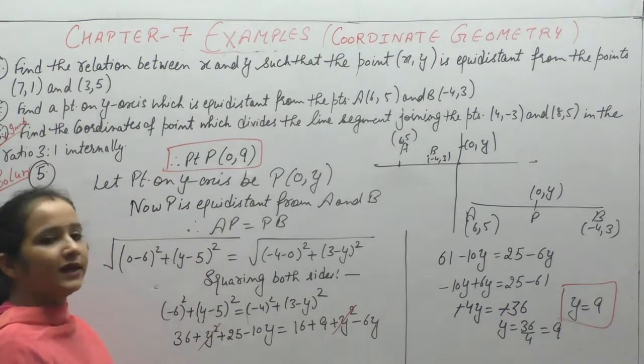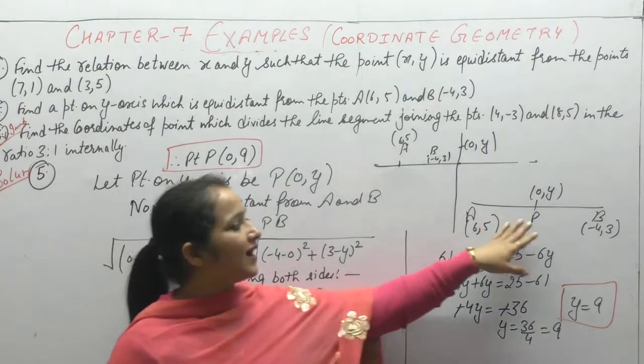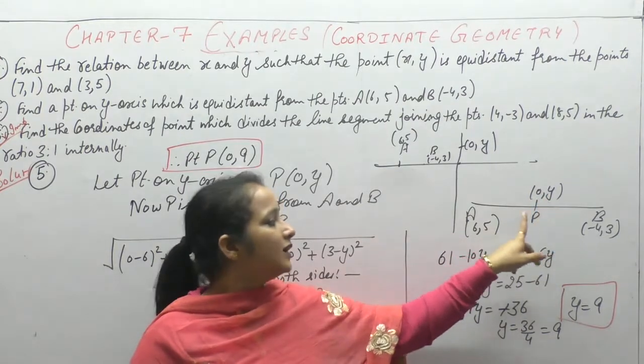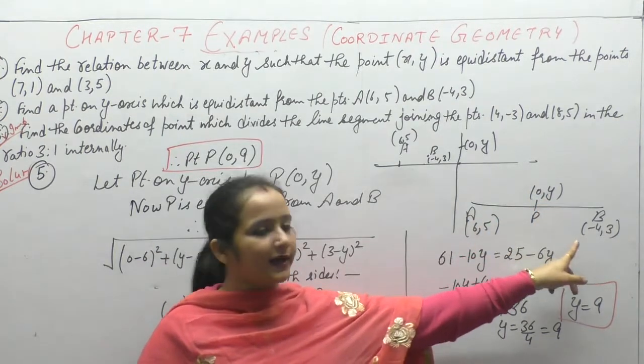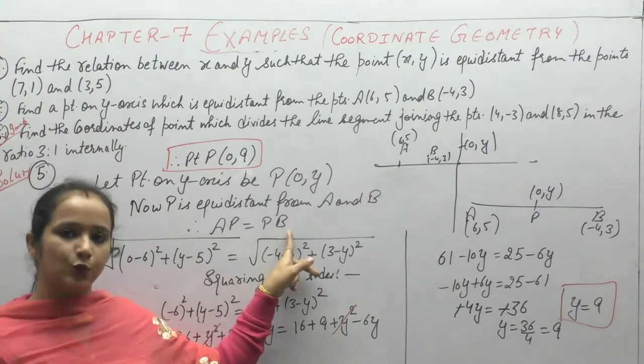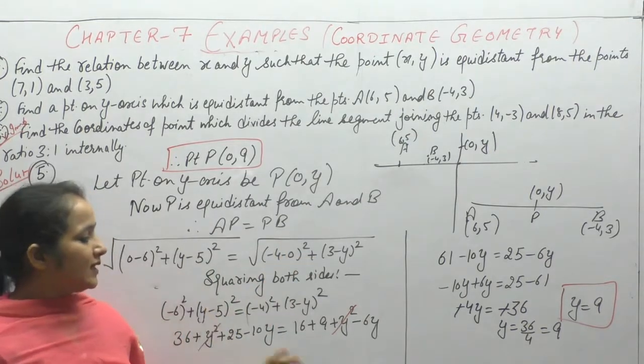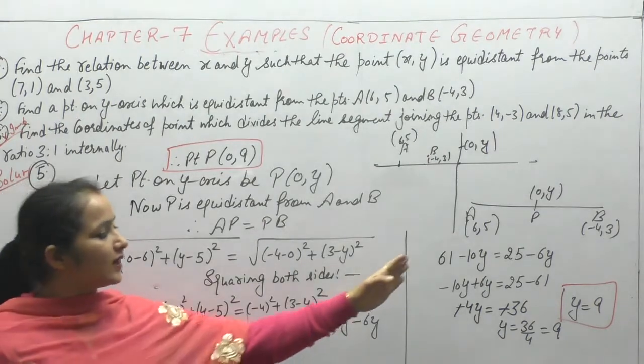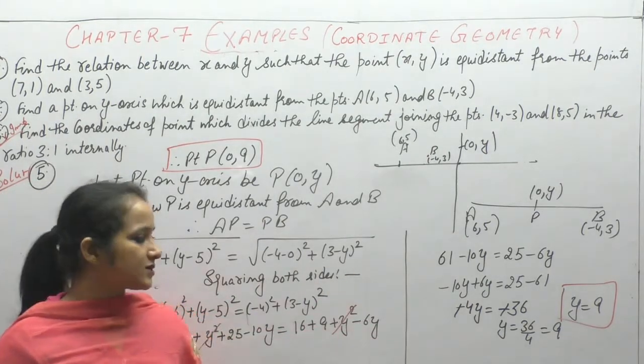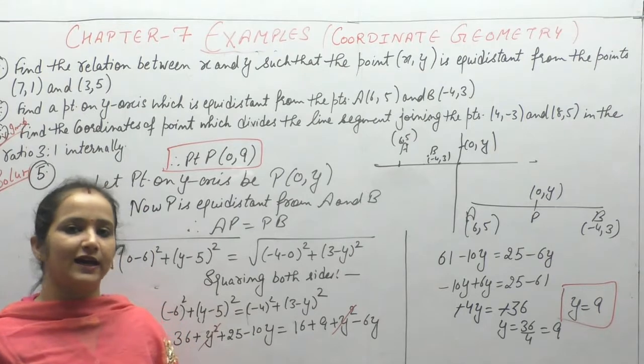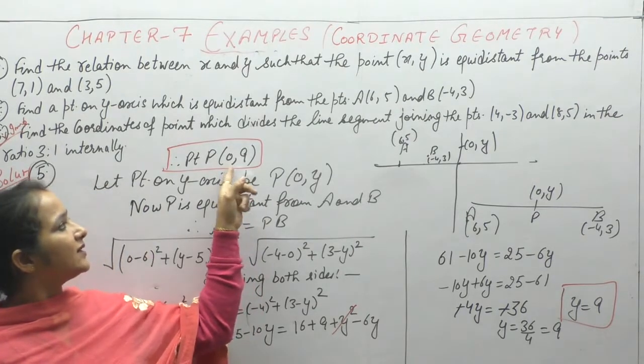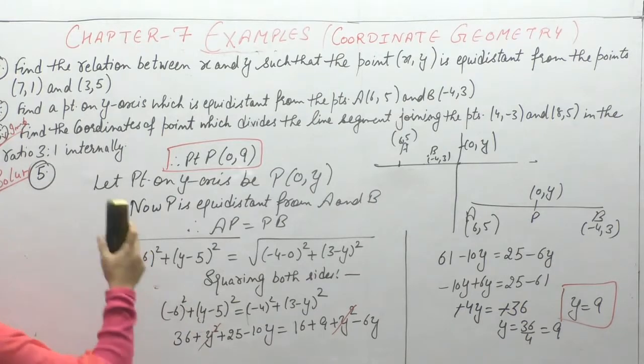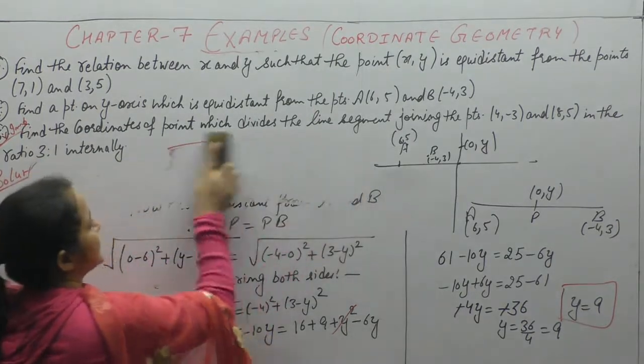Clear? We were given that point is on y-axis, so x-coordinate is 0. Point is equidistant from A and B, so AP = PB. We squared both sides, opened brackets, same terms cancelled, then solved remaining terms to get y = 9. Therefore, point on y-axis is (0,9).